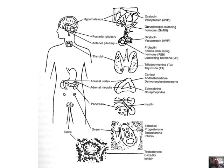The thyroid produces T3 and T4 — we're mainly going to focus on T4, which is thyroxin. Note that there's also thyroid-stimulating hormone. The adrenal glands — the adrenal cortex and medulla — produce cortisol, epinephrine, and norepinephrine. These are essentially adrenaline, causing the body to respond in specific ways.